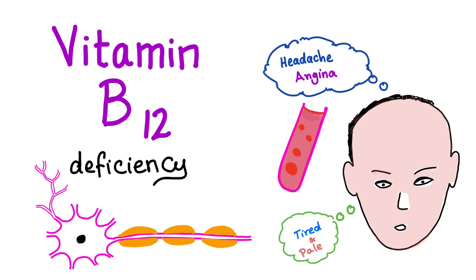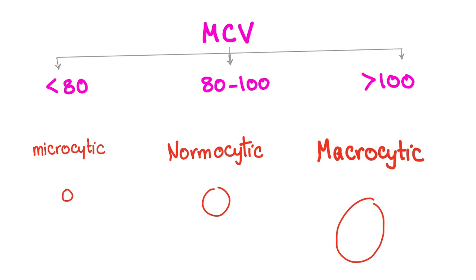However, folate deficiency had symptoms of anemia, but no neurological symptoms. Huge difference. So as you know, the mean corpuscular volume can determine is the anemia microcytic, normocytic, or macrocytic.